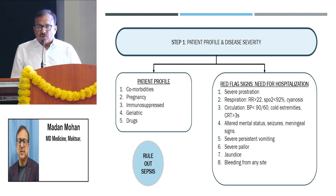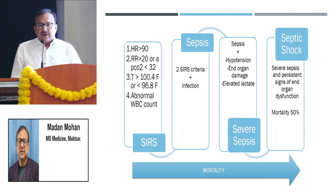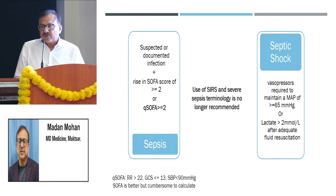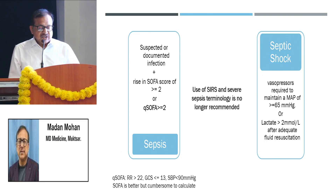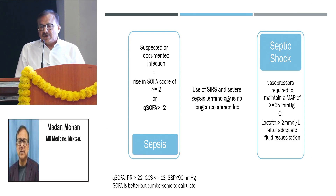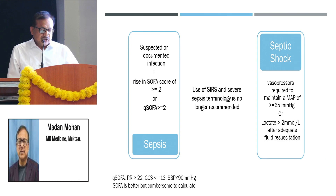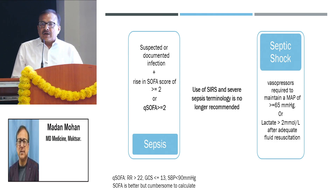At this stage we should look for sepsis, because every minute matters in the management of sepsis. Earlier we used to define sepsis with SIRS criteria and a localized site of infection. Now it has been taken over by the SOFA score — Sequential Organ Failure Assessment score — which is quite cumbersome to evaluate. So they have suggested a quick SOFA score in which we take three things: respiratory rate of more than 22, a GCS less than 13, and systolic blood pressure less than 90, along with the presence of a localized site of infection. If the patient has hypotension requiring vasopressors, we label it as septic shock.